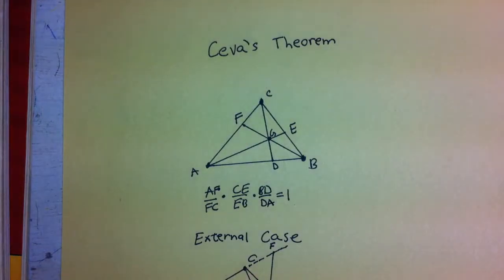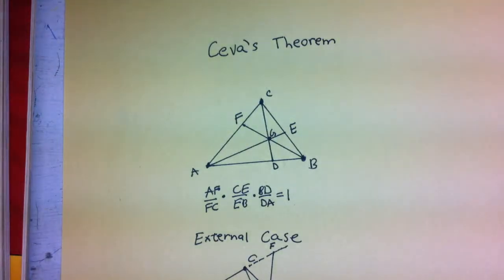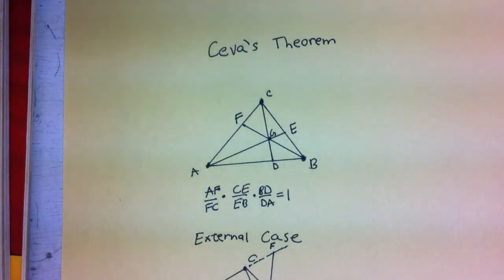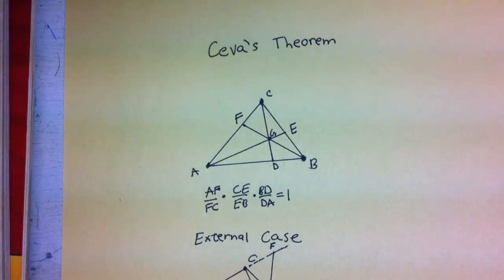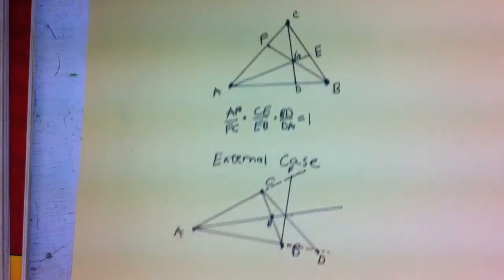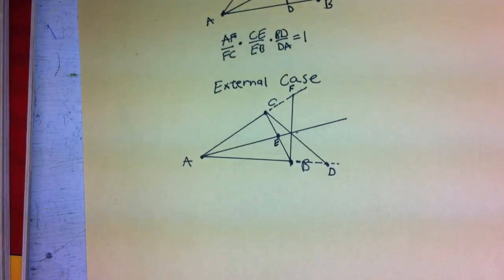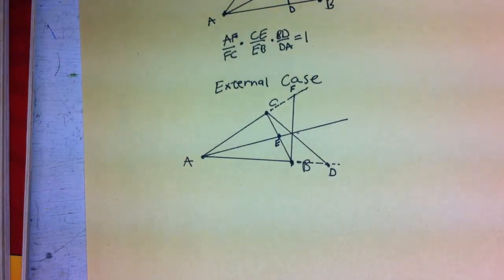In this video, we are going to talk about the external case of Ceva's Theorem. Here we have the diagram we drew for the internal case, where the three lines intersect within the triangle, and we also have the expression that we wrote. Now we're going to look at the external case, which is when the three lines intersect outside of the triangle.